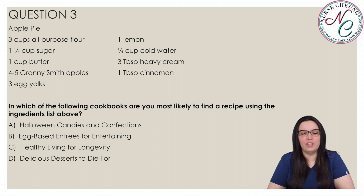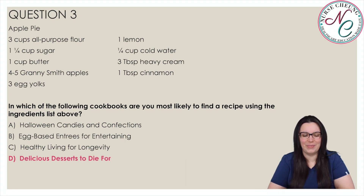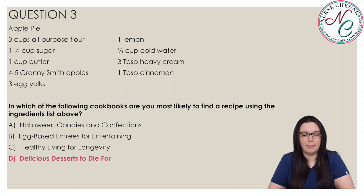Using the same recipe, which of the following cookbooks are you most likely to find a recipe using the ingredients above? The correct answer is D, Delicious Desserts to Die For. Apple pie is a dessert and would likely be included in a cookbook about desserts. Choice A is incorrect because apple pie is not a candy and is not traditionally served at Halloween. Choice B is incorrect because while the recipe calls for eggs, apple pie is not considered an egg-based dish such as a quiche and is not an entrée or main dish. Choice C is incorrect because while apples are healthy, an apple pie made with sugar would not be considered a particularly healthy dish.